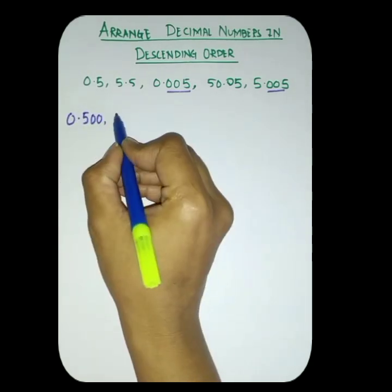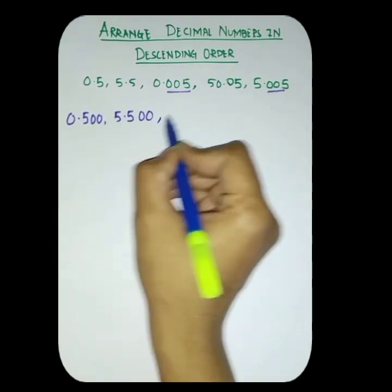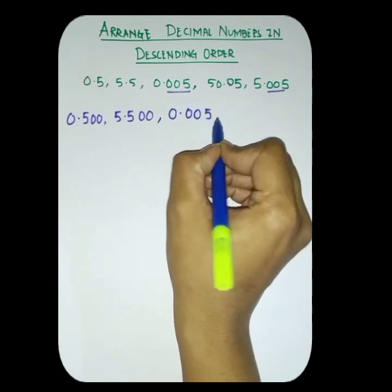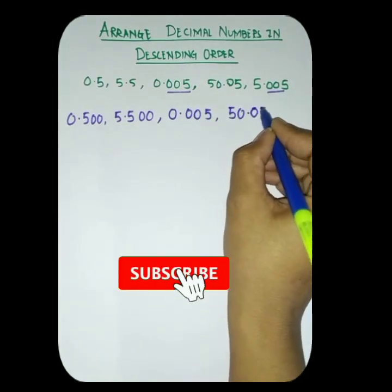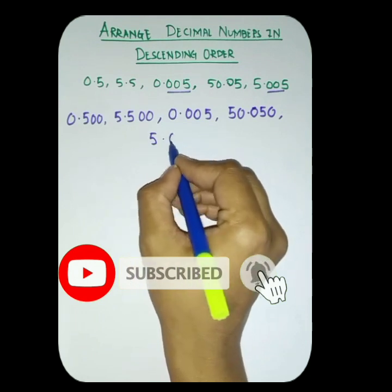0.500, then 5.500, then 0.005, then 50.050, and last one 5.005.